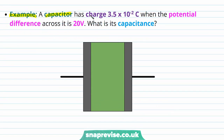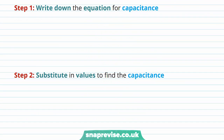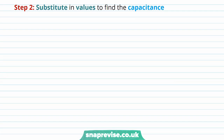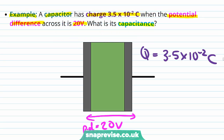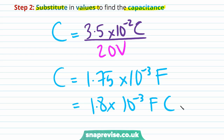For example, a capacitor has a charge of 3.5 × 10⁻² coulombs when the potential difference across it is 20 volts. What is its capacitance? The capacitor stores a charge Q = 3.5 × 10⁻² C — just the magnitude, since one plate stores positive charge and the other negative. Step 1: write down C = Q / V. Step 2: substitute in values — C = (3.5 × 10⁻²) / 20 = 1.75 × 10⁻³ farads, or 1.8 × 10⁻³ F to two significant figures.